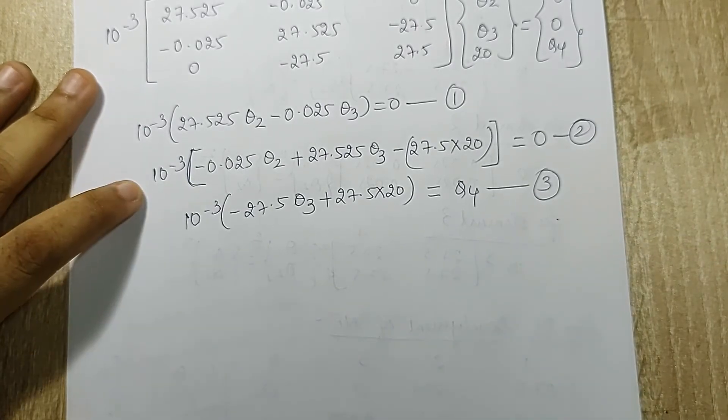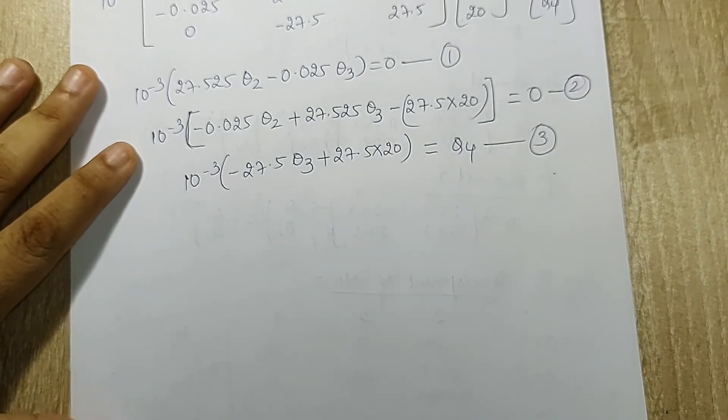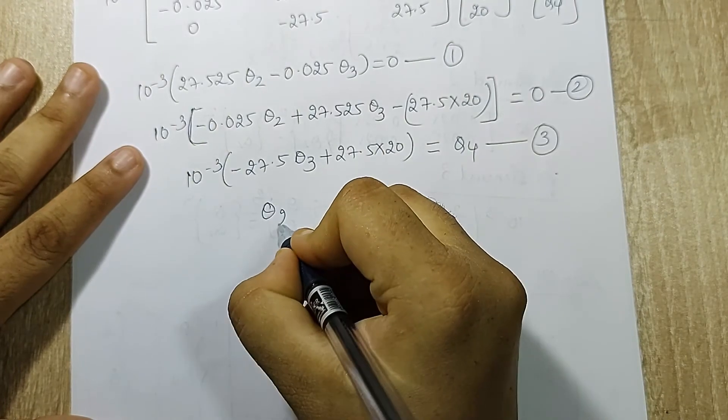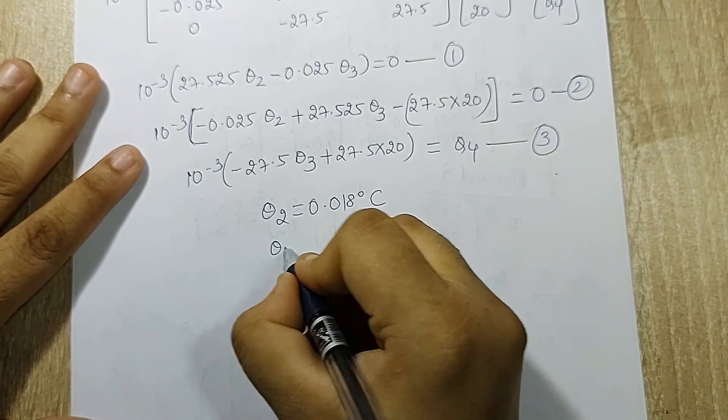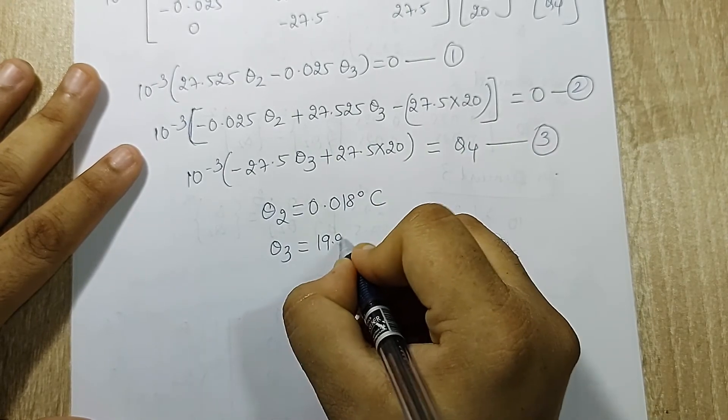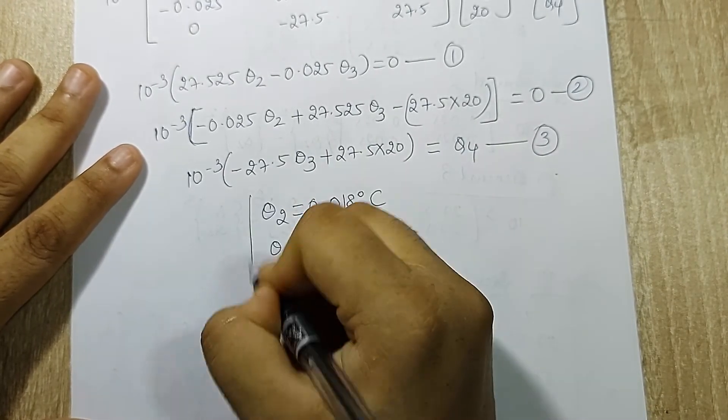On solving equation 1 and 2 simultaneously when I solve them, I get the value of theta_2 as 0.018 degrees Celsius and theta_3 as 19.98 degrees Celsius.